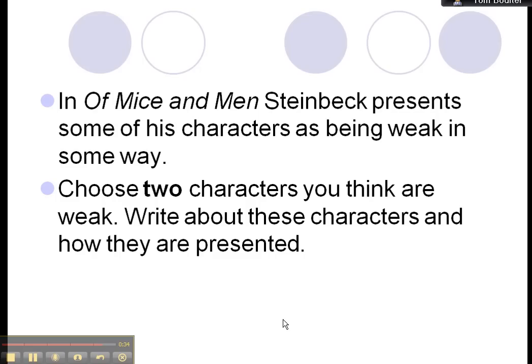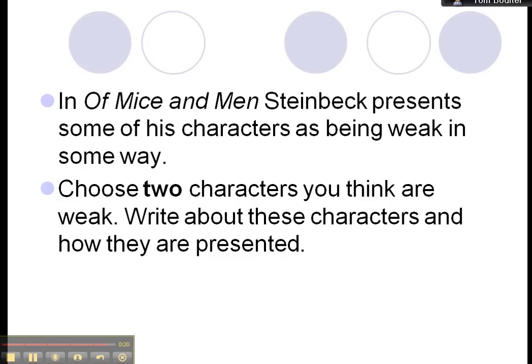Right. So, I would say it doesn't work for all questions. Look at this one. In Of Mice and Men, Steinbeck presents some of his characters as being weak in some way. Choose two characters you think are weak, write about how they're presented. Well, that's going to be more difficult to do a very simple three-step plan. You might have to do sort of two mini three-step plans for that.